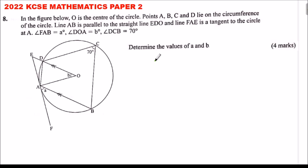To work out the required values, note that ABCD is a cyclic quadrilateral — a four-sided figure with all vertices touching the circumference of the circle. For a cyclic quadrilateral, the opposite angles add up to 180 degrees.